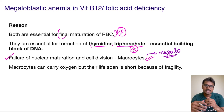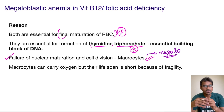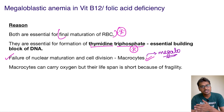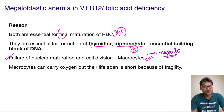These macrocytes can still carry oxygen, so what is the problem? The RBCs are big, so they cannot navigate into the minor capillaries. This leads to increased fragility of the cells, which leads to a reduced lifespan of the macrocytes.